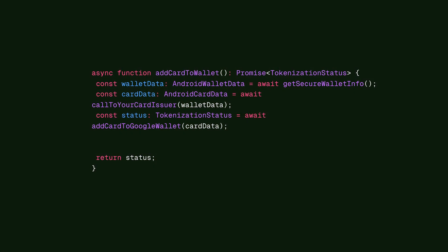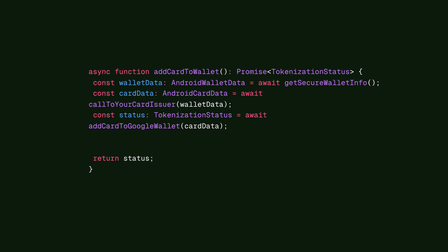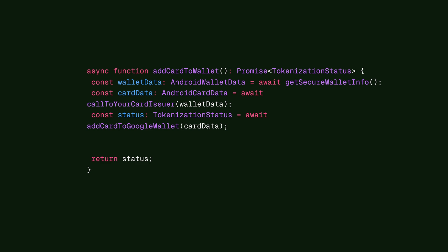And now you're ready to call Add Card to Google Wallet. Firstly, it checks if Google Wallet is available on the user's device. If not, it will try to initialize it. Once that's done, the native flow will be displayed. From this point on, the process is pretty similar across both platforms.